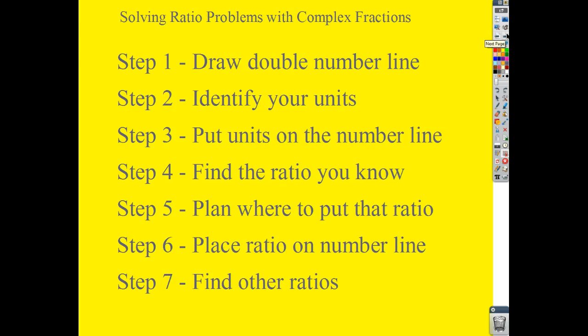The steps for solving unit rates are going to be pretty much the exact same thing. First, we're going to draw our double number line. We're going to identify the units and put units on the number line. We're going to find the ratio that we know, plan where to put it on the number line, then put the ratio on the number line and use that information to find other ratios.